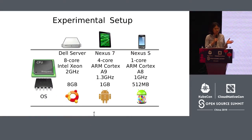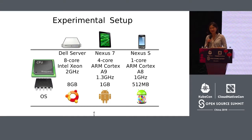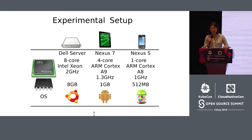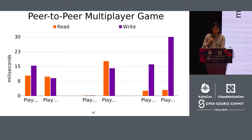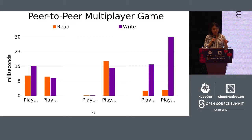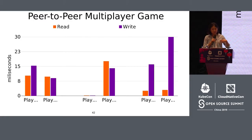Five years ago when I did this research, we did a little experiment. We ran it on a couple of mobile devices that were pretty out of date and a Dell server in our lab, all running over Wi-Fi and 3G. We built a multiplayer game and used a couple of different deployment configurations. What you're seeing here is the read and write latency — for making a move and reading the state of the game board — in milliseconds.